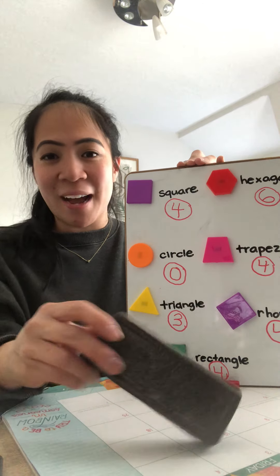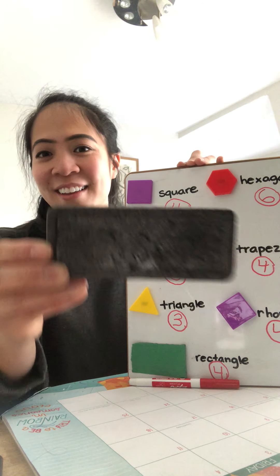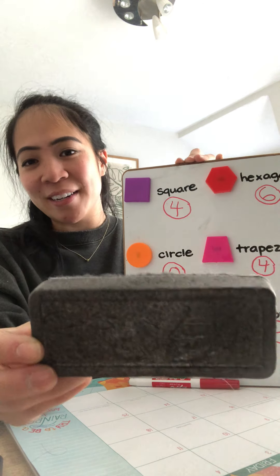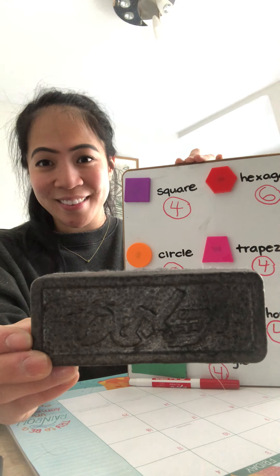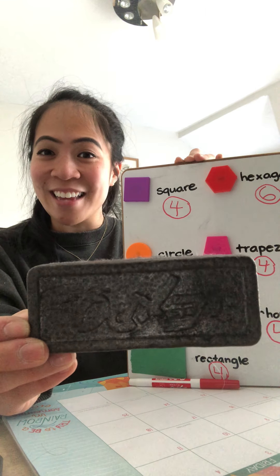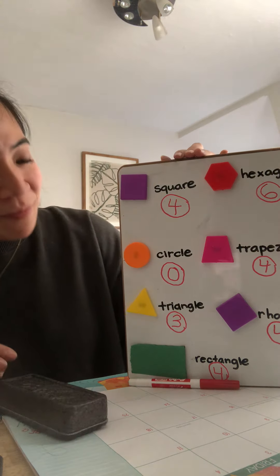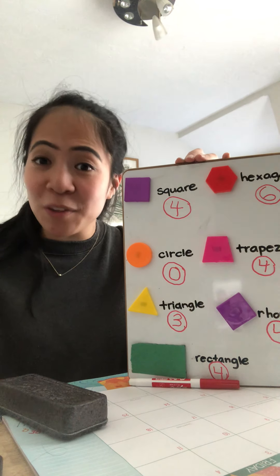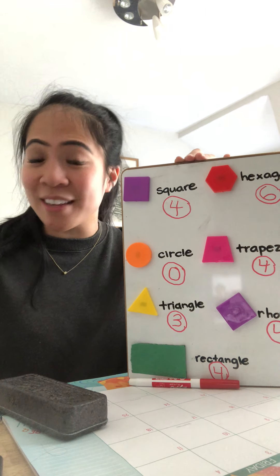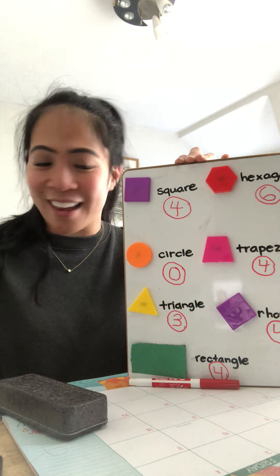And also, my eraser for my board is what shape? A rectangle. Okay. So there are shapes everywhere. If you just look really closely, you might find a shape outside and inside.